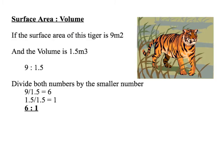You could be asked to calculate surface area to volume ratio. So we've got a tiger: let's say the surface area of the tiger is 9 metres squared and the volume is 1.5 metres cubed. If you put this into a ratio, the surface area would be 9 and the volume 1.5. You want to get it to something to 1, so divide both numbers by the smallest number — in this case 1.5. So 9 divided by 1.5 is 6, and 1.5 divided by 1.5 is 1. That's a ratio of 6:1.